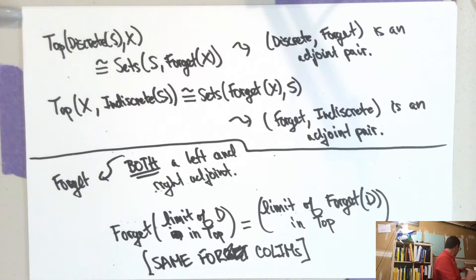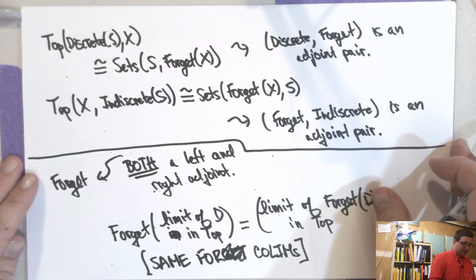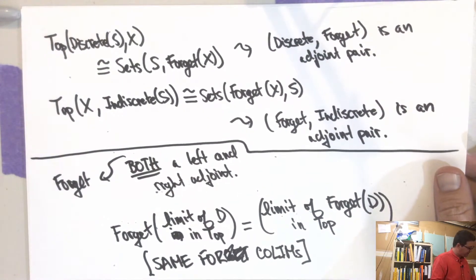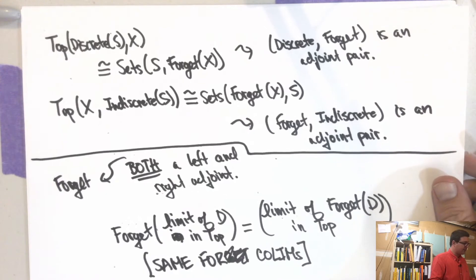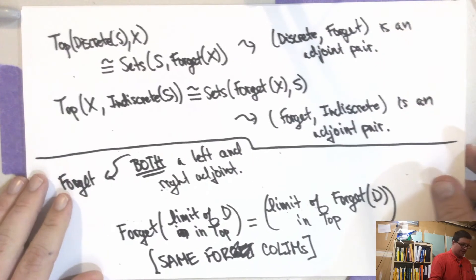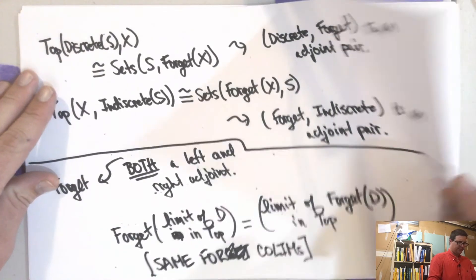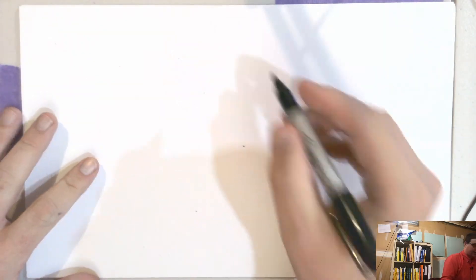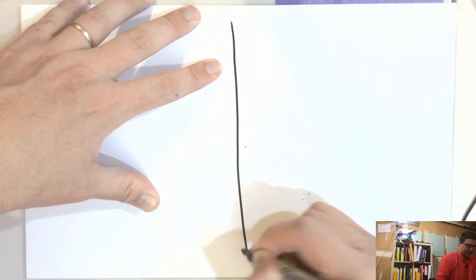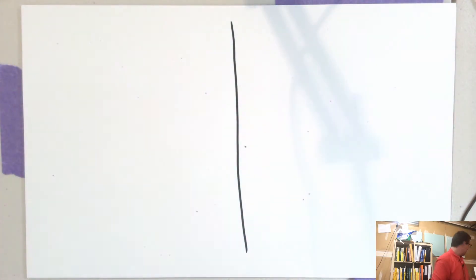I didn't really say what an adjunction was. Here's another example where you have left and right adjoints. Let's look at pointed topological spaces.